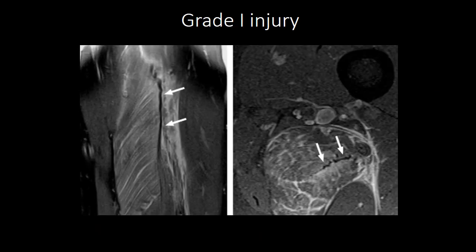This is a grade 1 injury of the semimembranosis muscle. There is diffuse muscle edema giving a feathery appearance. The tendon at the myotendinous junction appears continuous, of normal caliber, and shows uniformly low signal intensity. There is a mild degree of perifascial edema. No obvious discontinuity or disruption of the muscle fibers is visible.